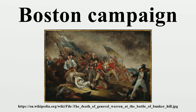In July 1775, George Washington took command of the assembled militia and transformed them into a more coherent army. On March 4, 1776, the Patriot Army fortified Dorchester Heights with cannon capable of reaching Boston and British ships in the harbor. The siege ended on March 17, 1776, with the withdrawal of British forces from Boston. Boston celebrates March 17 as Evacuation Day.